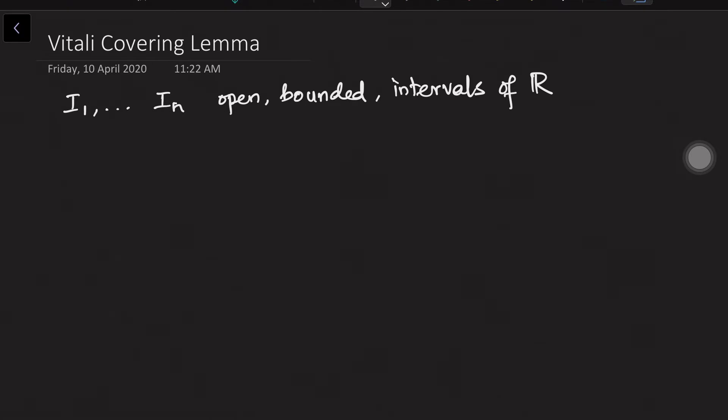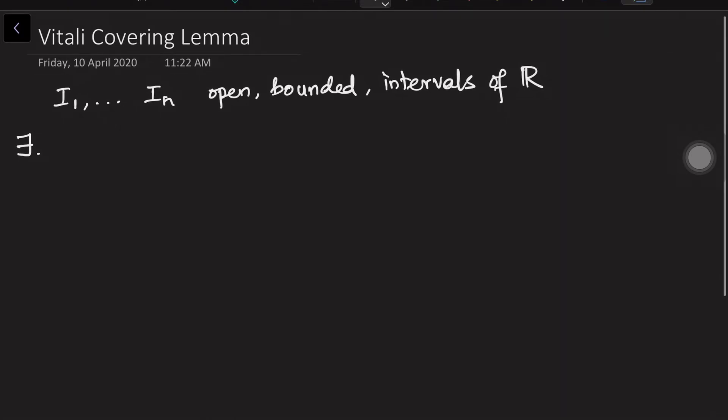then what it says is there exist a sublist, say i_k1 to i_km, such that i_1 union whatever it has covered can be covered by,